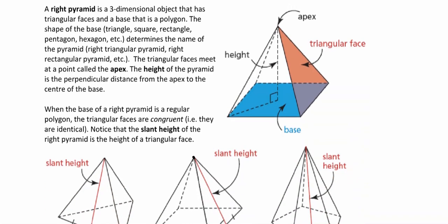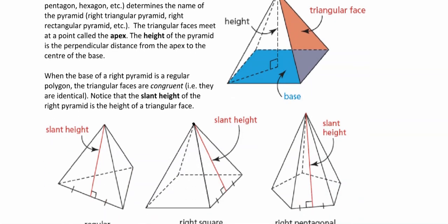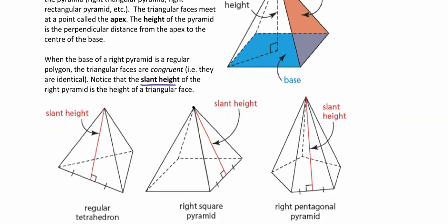A couple of terms to get going: the apex of a pyramid is the peak. The height of the pyramid is always the line from the center of the base up to the apex. The base is the bottom — the square or rectangle on the bottom. The triangular faces form on the sides. One you might not remember is called the slant height of the pyramid.